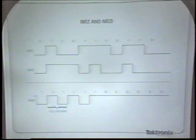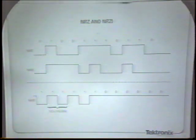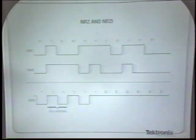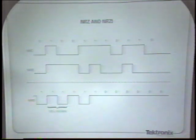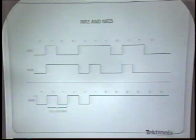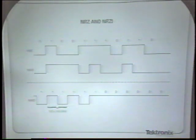The advantage of NRZI is that you can invert the signal and still have the same information, since it's contained in the zero crossings. If you had all ones, you'd basically have a square wave at one half of the clock frequency. The problem with all zeros is that we must extract the clock from the data, and to do that we need zero crossings. By putting the signal through a scrambler and then the inverse function on the receiver, we ensure enough zero crossings to easily extract the clock.